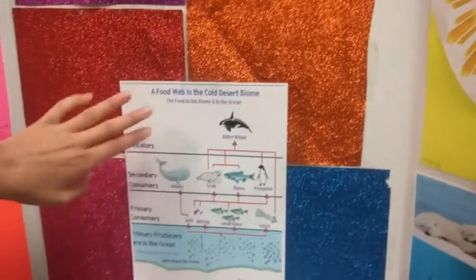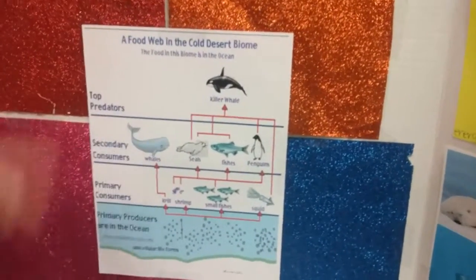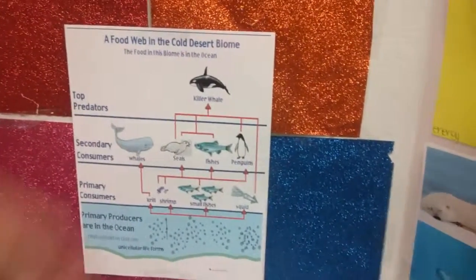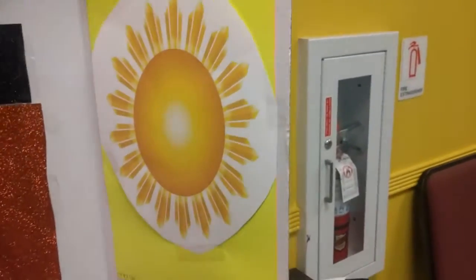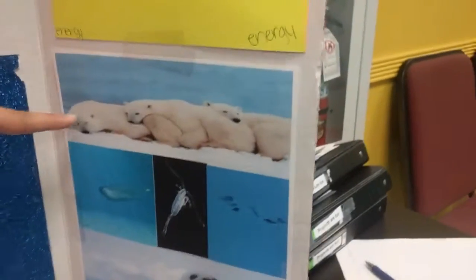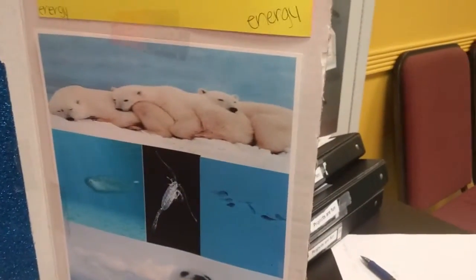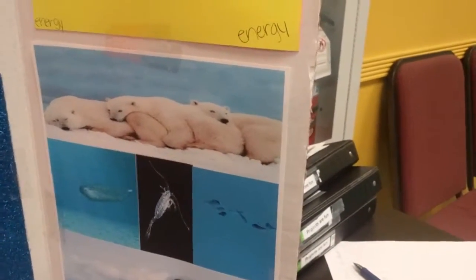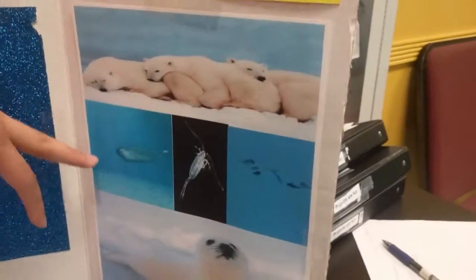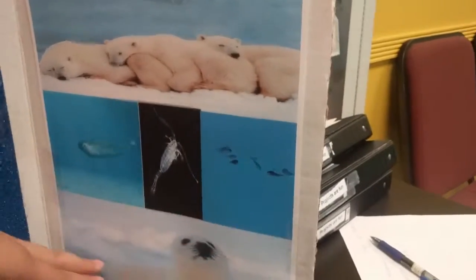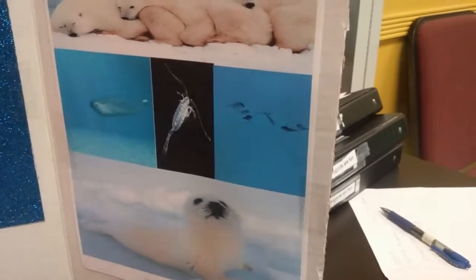And then I just put an example of a food web, and then I put the sun because that's where all the energy comes from and everything. And then these are some of the animals from my food web. So when I wrote it, I just printed out pictures of it. So the polar bears, the narwhal, the plankton, the fish, and then the arctic seal.